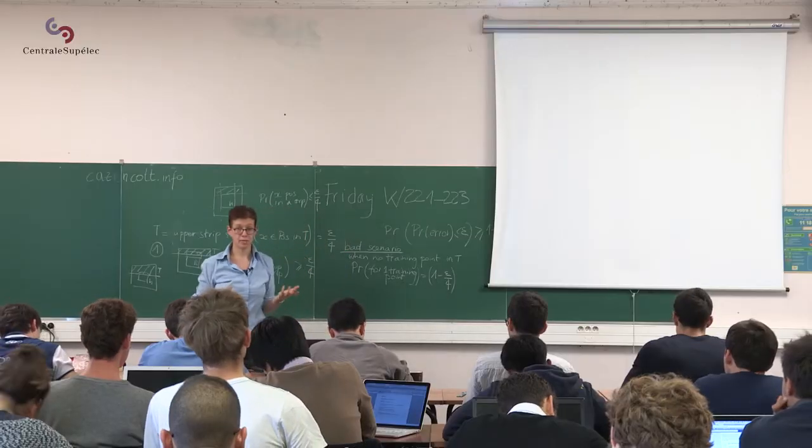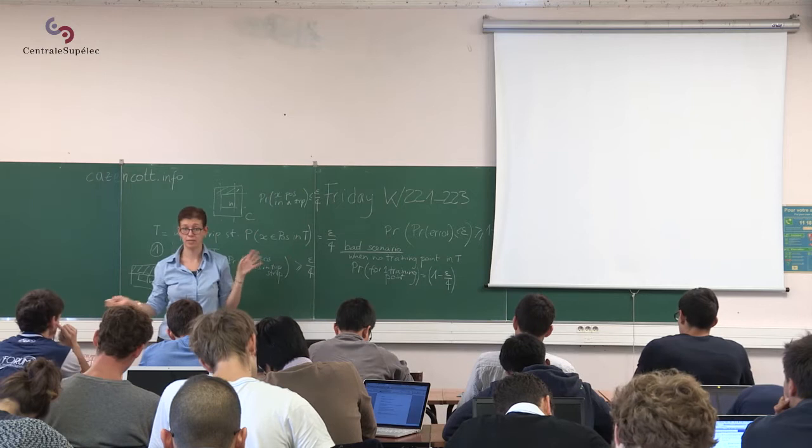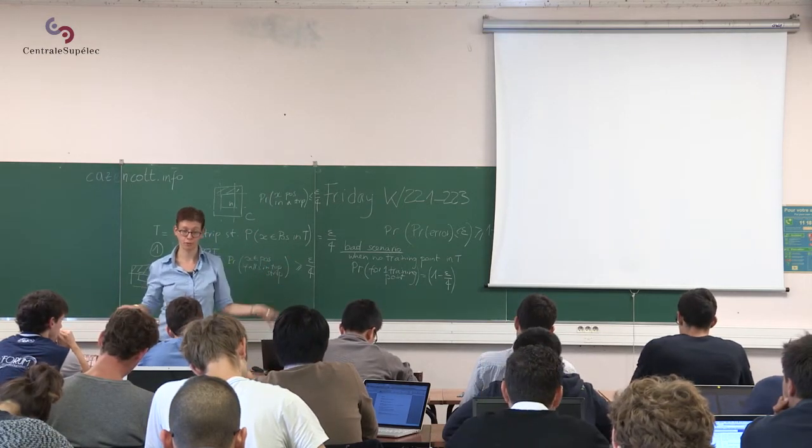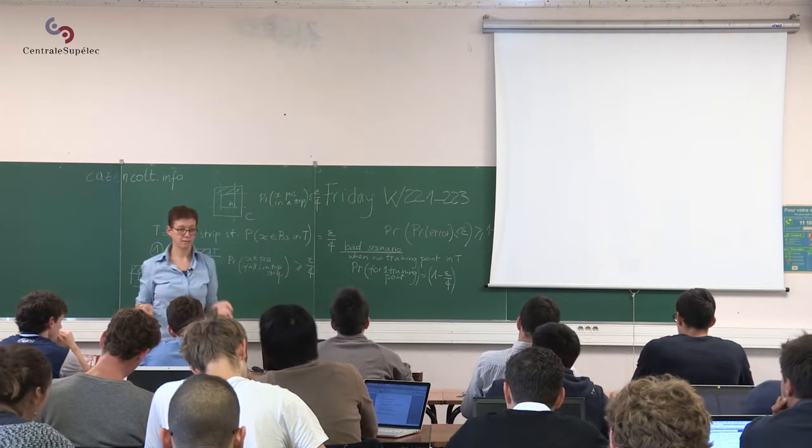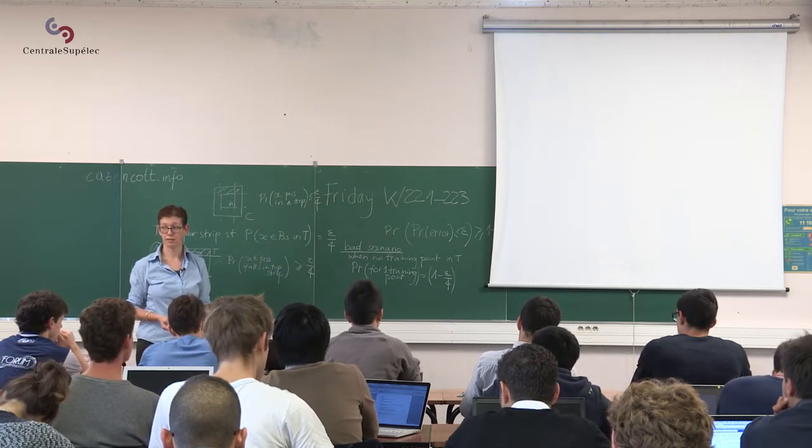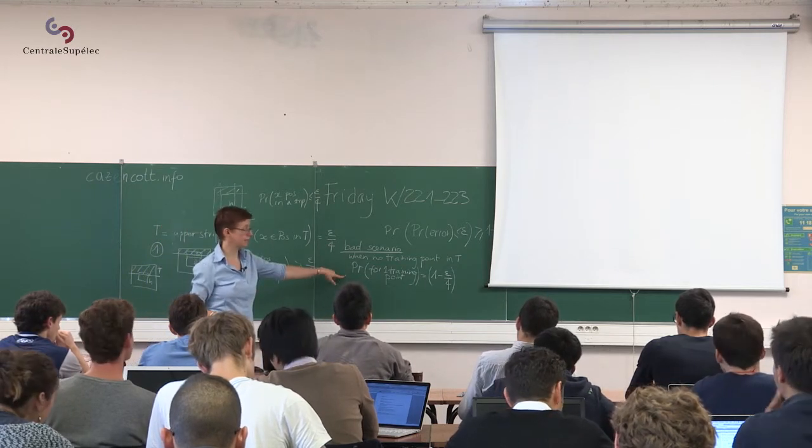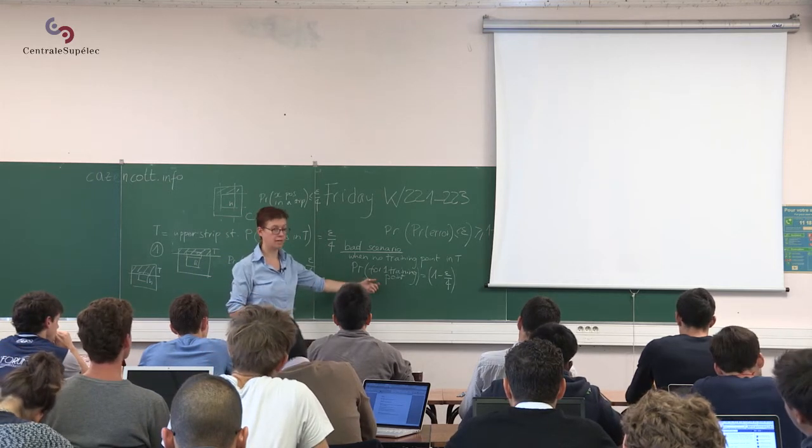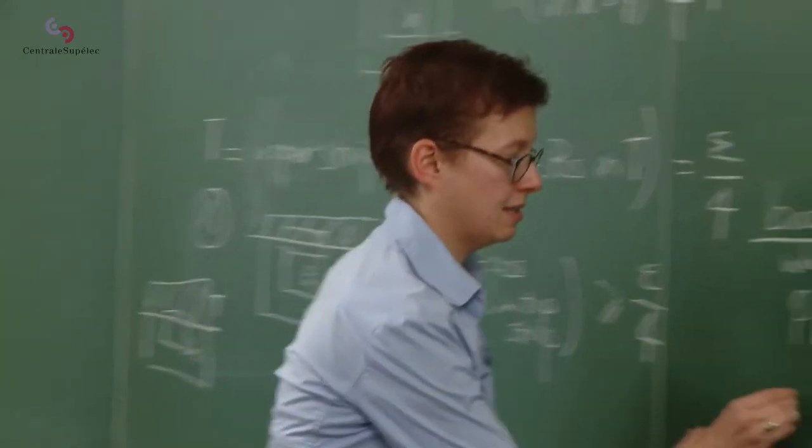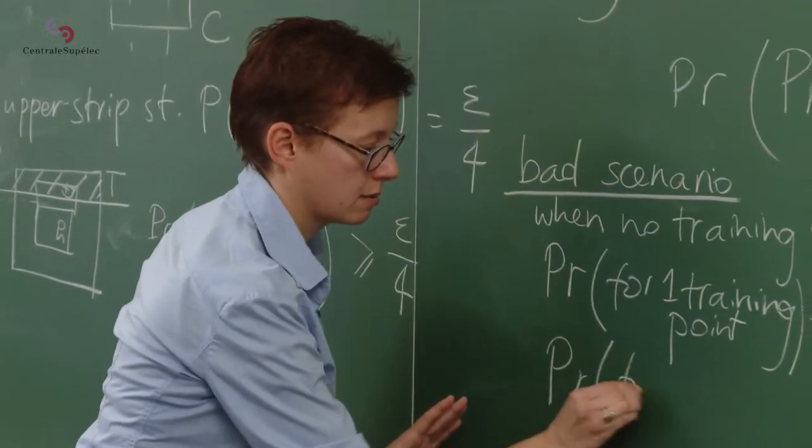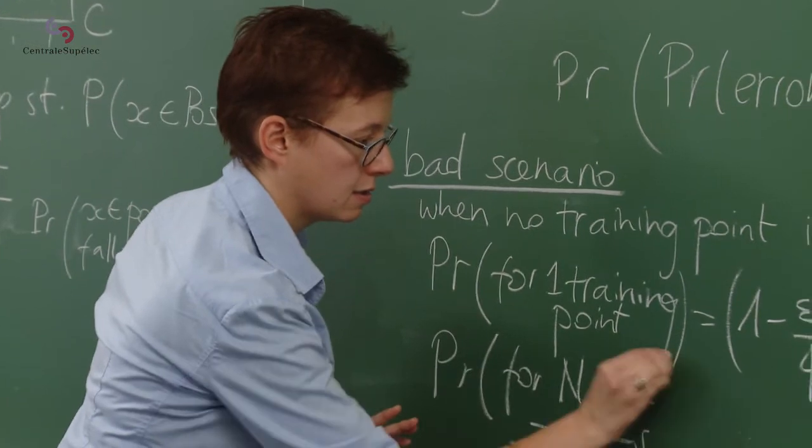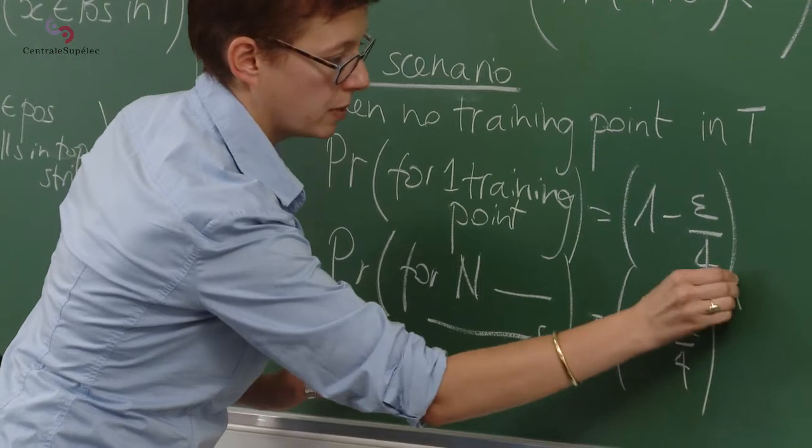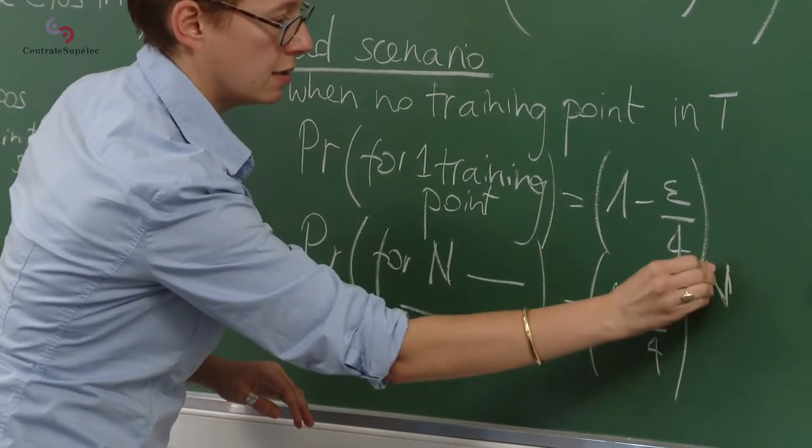So the probability for one training point of this bad scenario happening is 1 minus epsilon over 4. Now I have n training points. I'm assuming those training points are independent from one another because this is what you always assume in machine learning. And it's not true in real life, but we're assuming that they're completely independent from one another. So then the probability of this happening for n training points is 1 minus epsilon over 4 to the power of n.